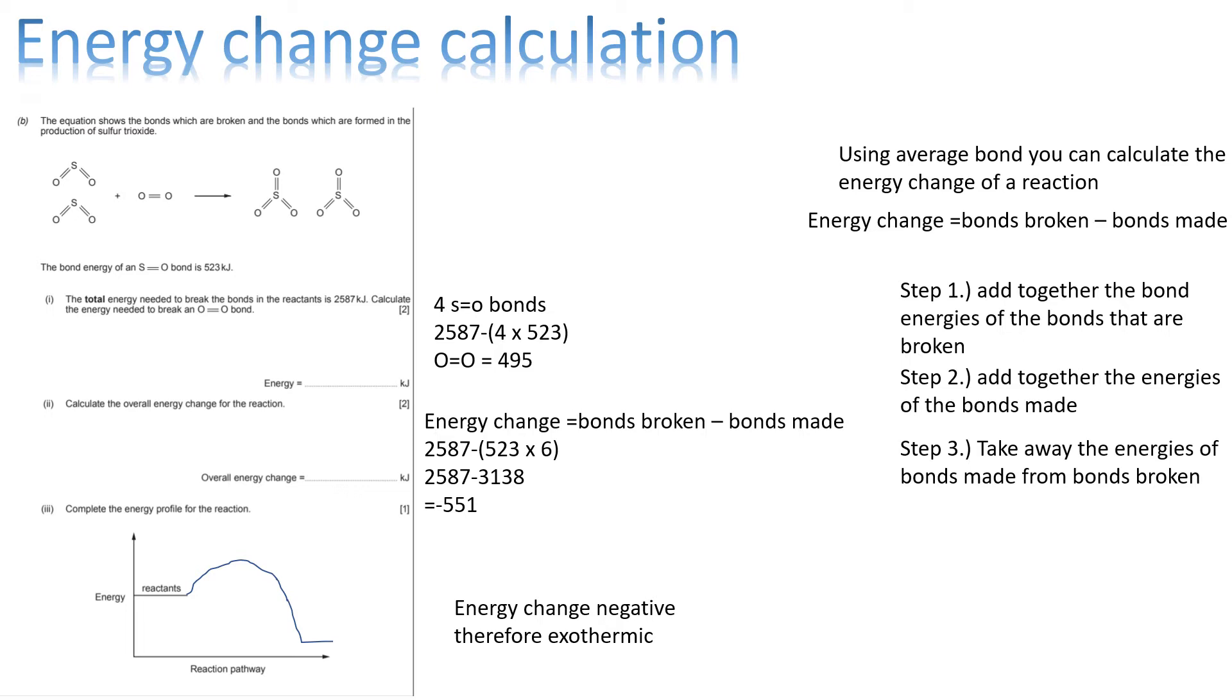Let's look at this first question. They've given us the production of sulphur trioxide. They've showed us the reaction scheme. They've given us the value of a sulphur-to-oxygen bond, 523 kilojoules. The question is, the total energy needed to break the bonds in the reaction is 2,587 kilojoules. Calculate the energy needed to break an oxygen-to-oxygen bond.